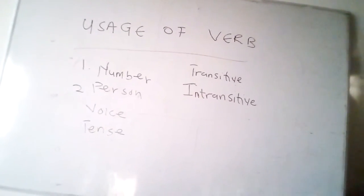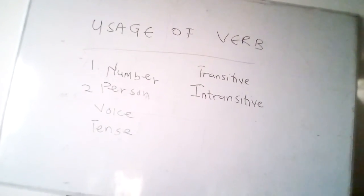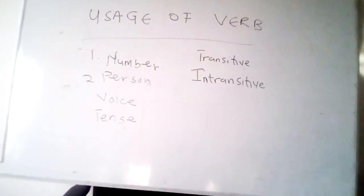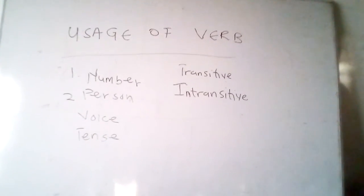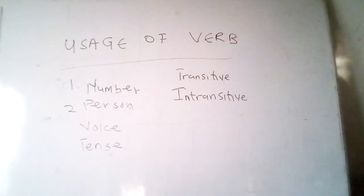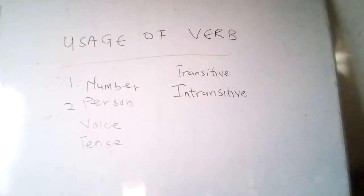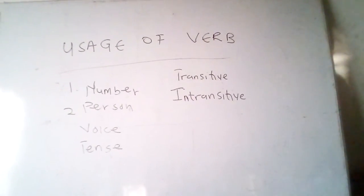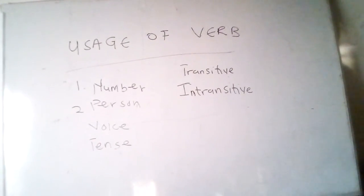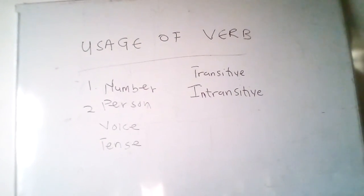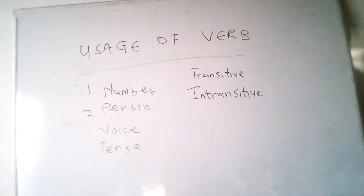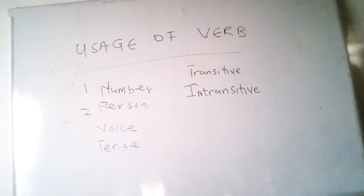Tense refers to the change that takes place in the usage of the verb to indicate the time of happening. Tenses tell the time of action and occur only in verbs. There are three main tenses: simple present tense, simple past tense, and perfect tense. Some other aspects of these three main tenses need to be discussed for comprehensive usage. Simple present tense expresses an action which is happening at the present time or which happens continuously.